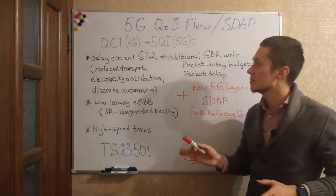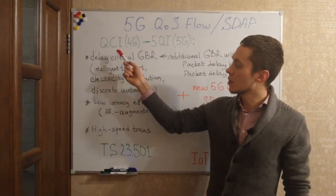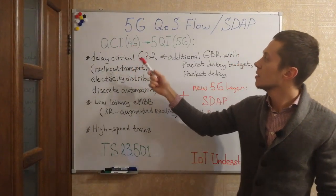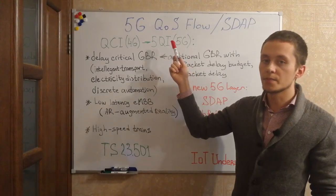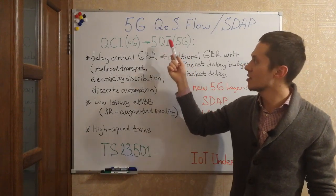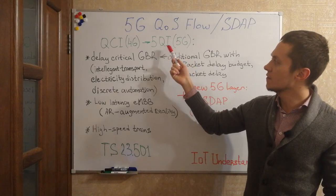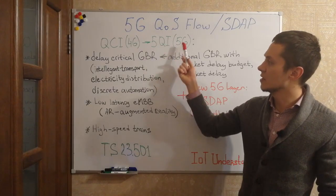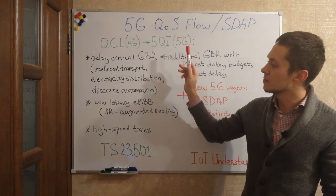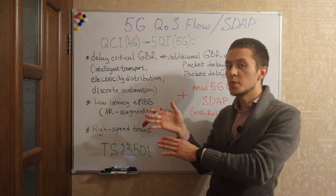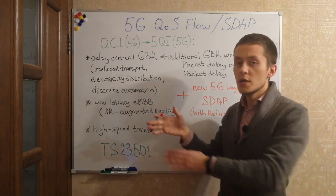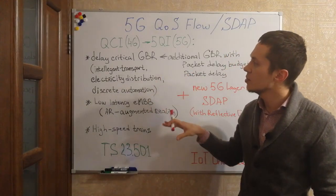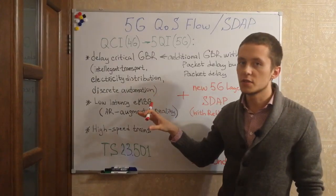Let's start with identifiers. In 4G we were talking about QCI. In 5G it's basically the same but in 5G we call it 5QI — 5G quality of service flow identifiers. And in 3GPP specifications, actually in this one, you can find the whole table that describes different services and support.